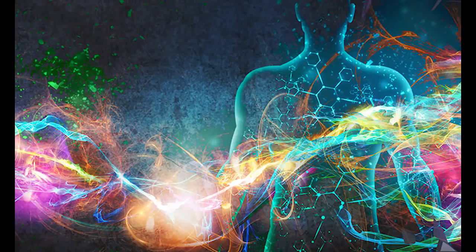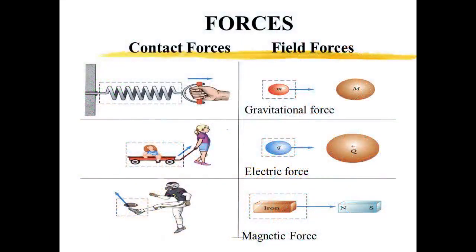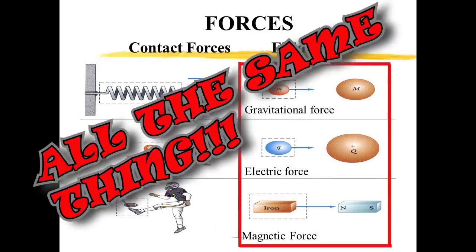As you heard Ken Wheeler state, everything is electrical. Not only is it all electrical, but he adamantly states that magnetism, gravity, and electricity are all the same thing. The part we will focus this video on is the quote where he states the only difference between magnetism and gravity is field coherency. Instead of trying to tell you what he means, I will show you with a few demonstrations.